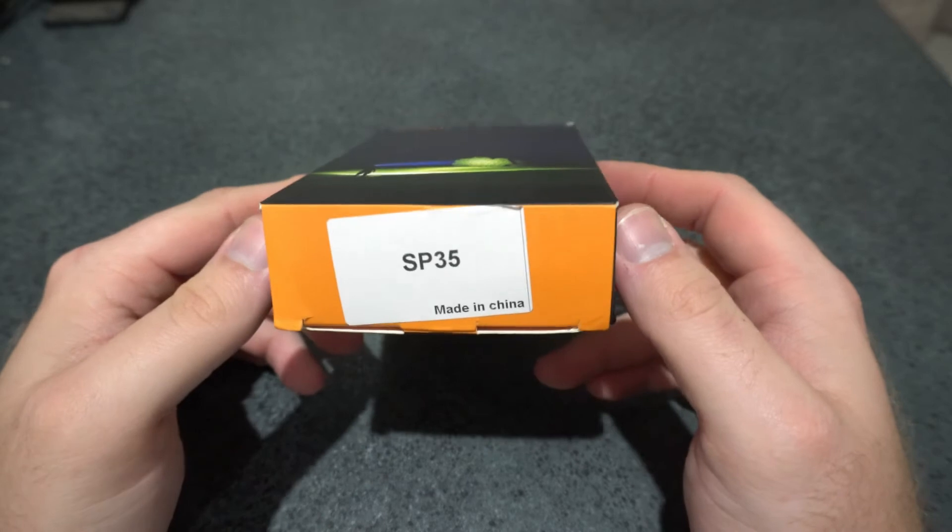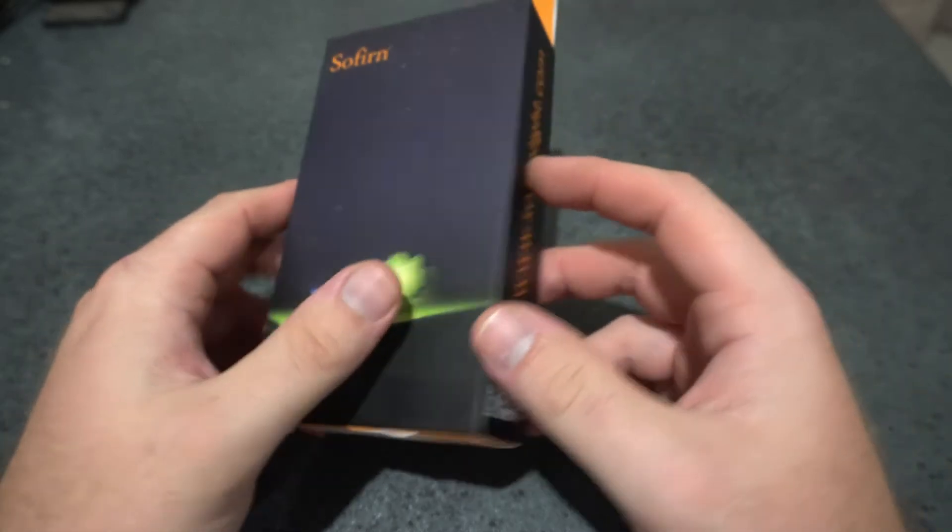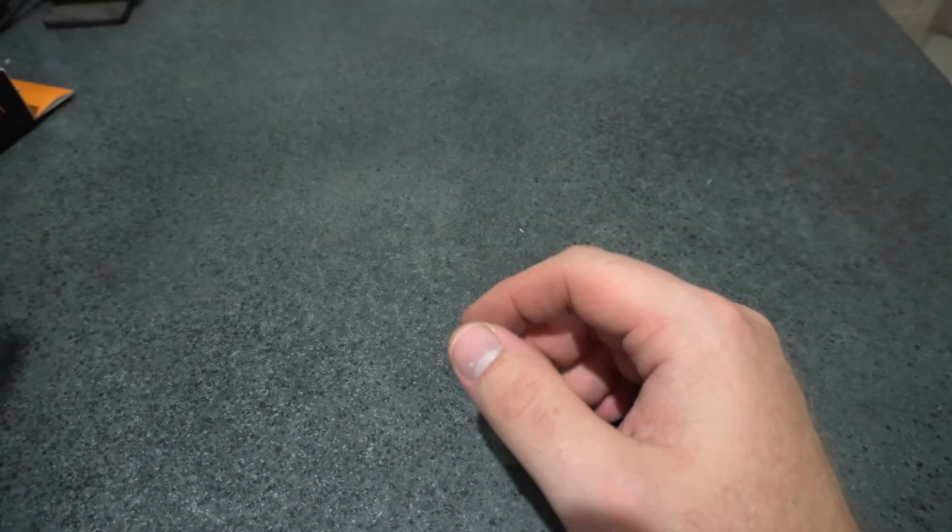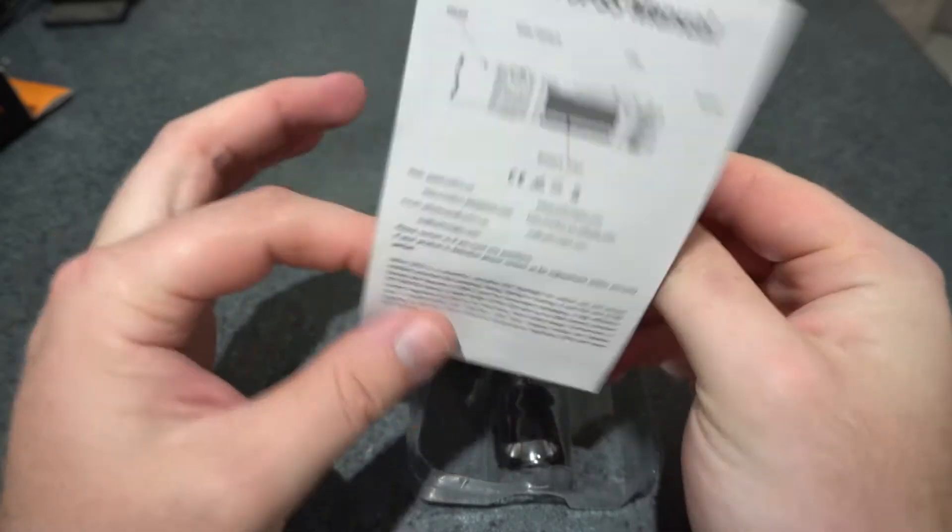This is the new Sofirn SP-35 that they sent me for review. This is just the box - I've already taken it out of the box just to make it easier. So we've just got the manual, user manual, and it has English, Russian, and I think German.